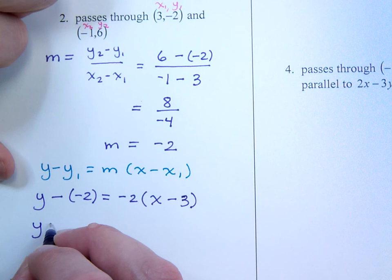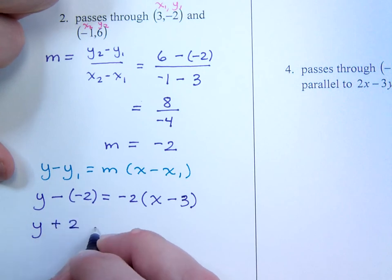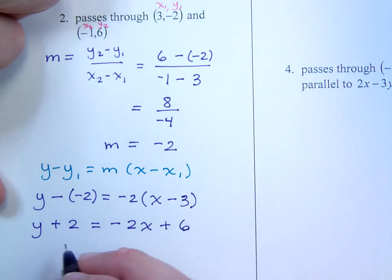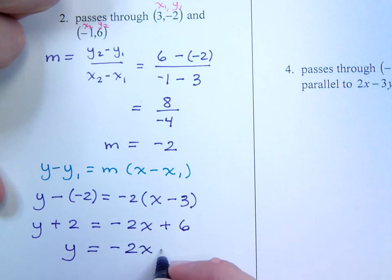So, when I just do the math here, you've got y plus 2 equals, and I distribute on the right, negative 2x plus 6. Solve for y by moving the 2 to the other side, and you have negative 2x plus 4.